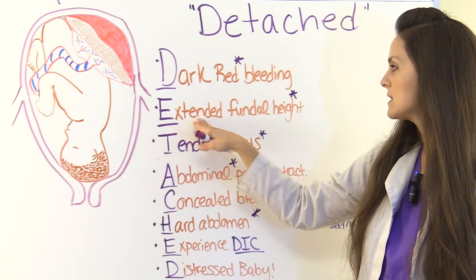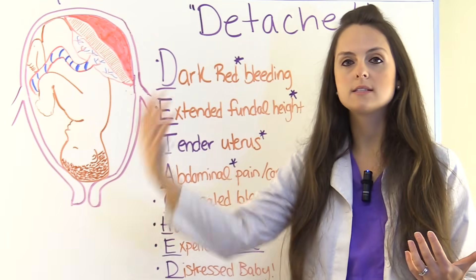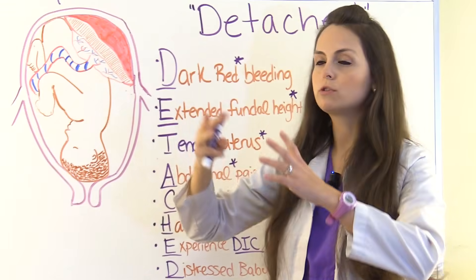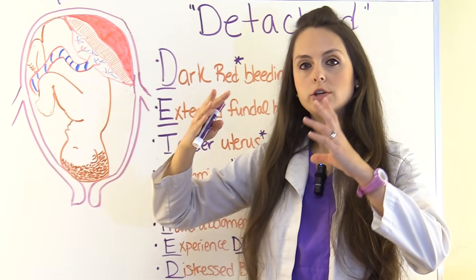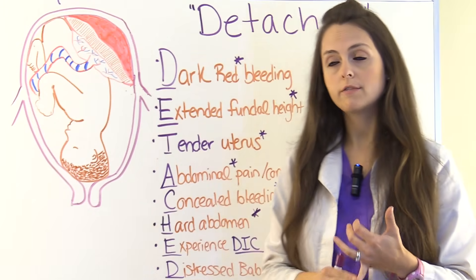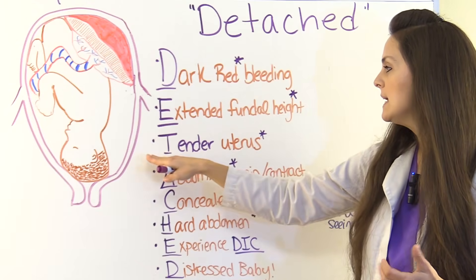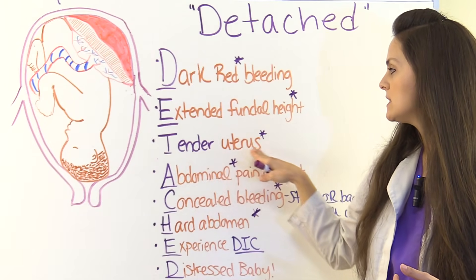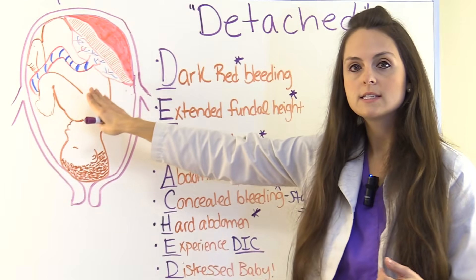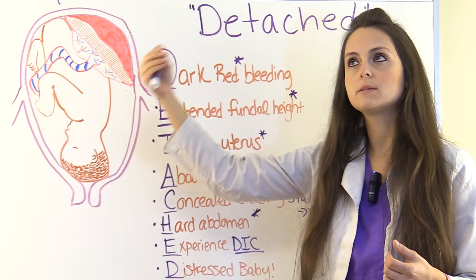E stands for extended fundal height. Again, because of the concealed bleeding staying inside the uterus, it will enlarge the uterus, increasing fundal height. That's why you want to monitor fundal height along with abdominal girth. T stands for tender uterus — the uterus will be tender in abruptio placenta, compared to placenta previa where it is soft and non-tender.